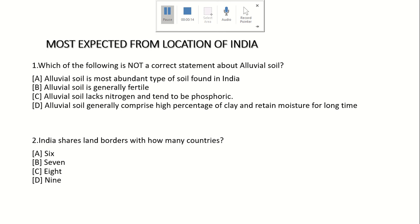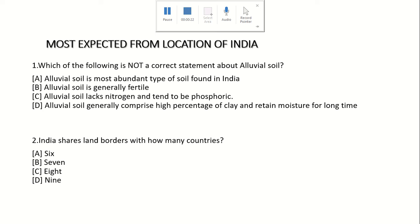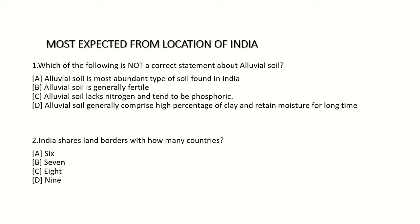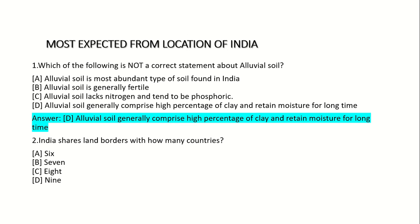First question: Which of the following is not a correct statement about alluvial soil? Option A: Alluvial soil is the most abundant type of soil found in India. Option B: Alluvial soil is generally fertile. Option C: Alluvial soil lacks nitrogen and tends to be phosphoric. Option D: Alluvial soil generally comprises a high percentage of clay and retains moisture for a long time. Answer: Option D.